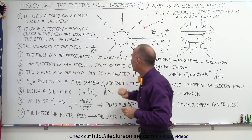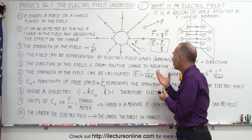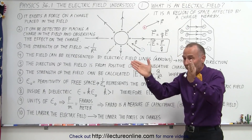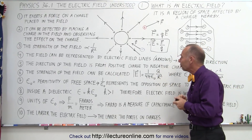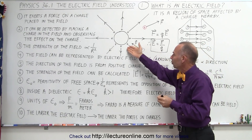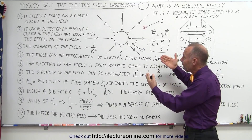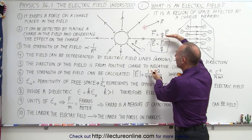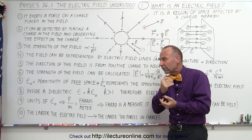The field can be represented by electric field lines, which are called electric field lines. Since the electric field is a vector quantity, it has both magnitude and direction. Electric field has a direction because it is always directed from positive to negative charges, and it also has a strength. The field can be stronger as you get close to the source and weaker as you go farther away. The electric field lines show you the strength by how dense the lines are — when the lines are close together the field is stronger, and when the lines are farther apart the field is weaker.